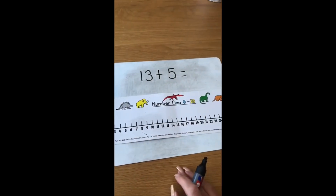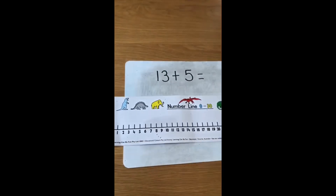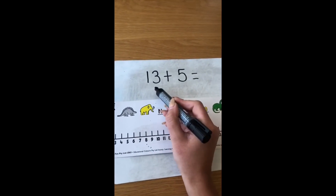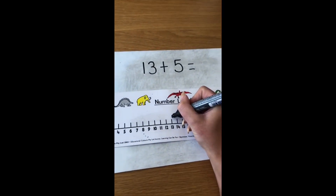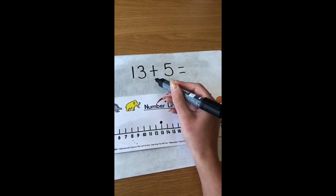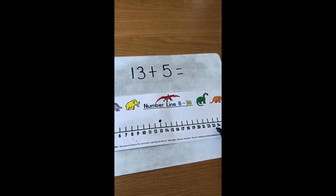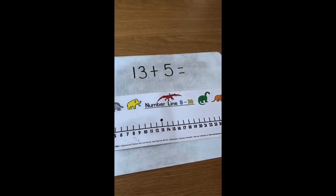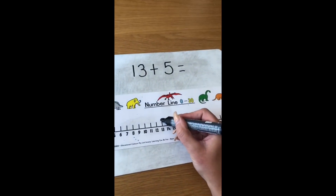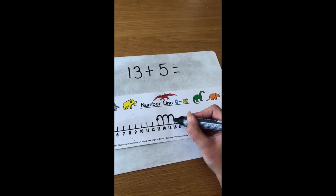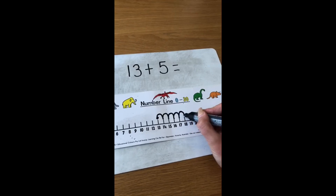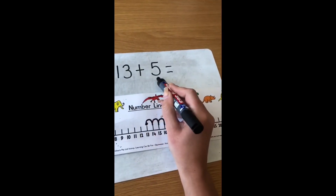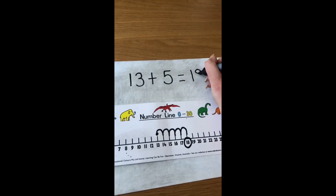So where do we need to start on the number line? Do I start at zero? No. Do I start at 20? No. I have to look at my number sentence. We're starting with number 13, so I'm just going to put a little dot above number 13. Now we know that we're adding on five. Remember, when we're adding, the number is getting bigger, so we're going to be jumping up the number line. Starting with number 13, we need to add on five, so we're going to make five jumps. Are you ready to count with me? One, two, three, four, five. Which number have we landed on? Well done — number 18. So we know 13 add five equals 18. I'm just going to write 18 there.